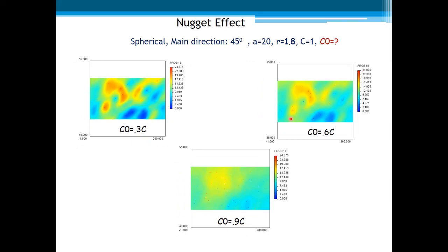Let us change now the nugget effect in three situations: 30%, 60%, and 90% of the sill. It is worth noting how Kriging performs as the nugget effect increases. To estimate the point at a spatial location, the effect of the closest samples decreases as the nugget effect increases. In other words, there is no reason to weight more the closest sample values when there is less spatial correlation. That is why the estimated maps tend to be more smooth as the nugget increases.